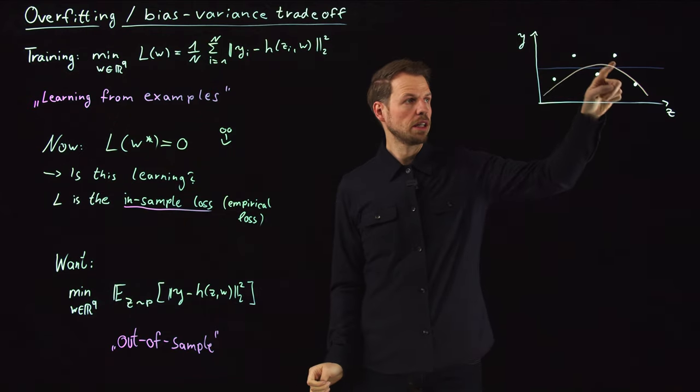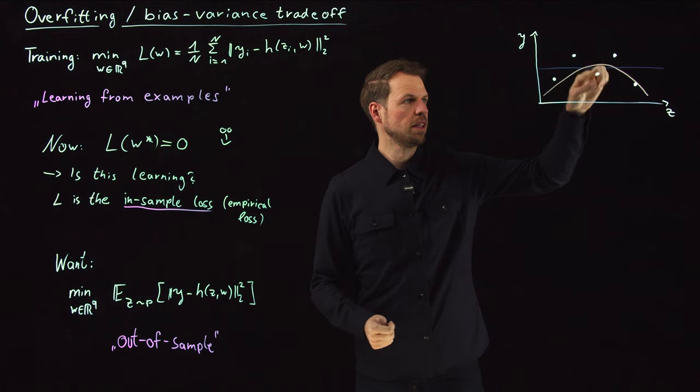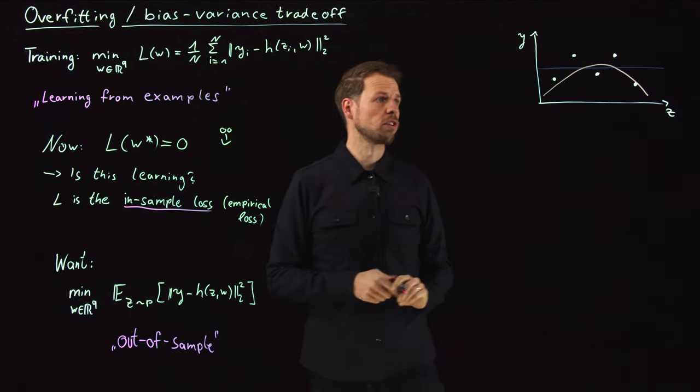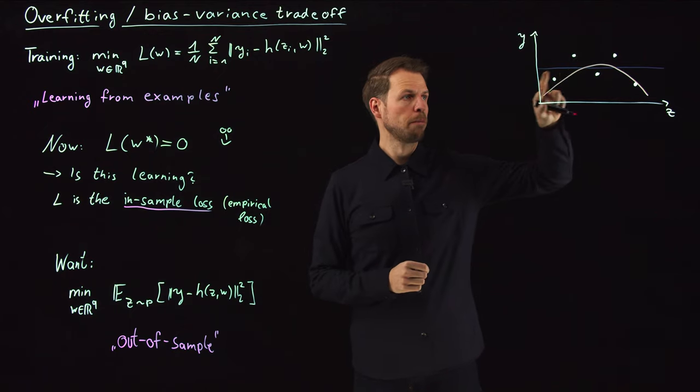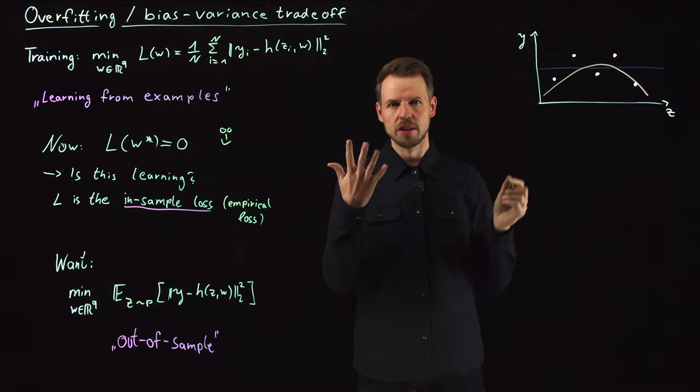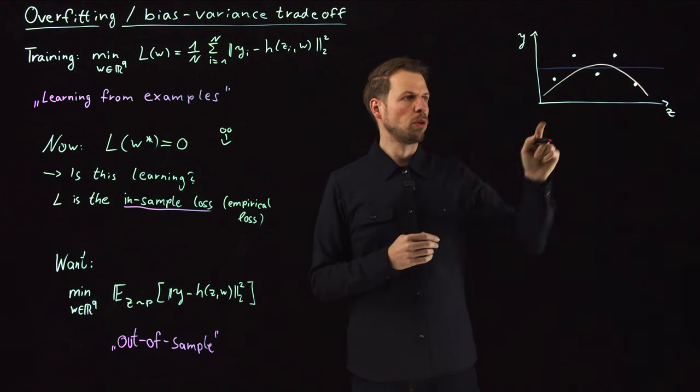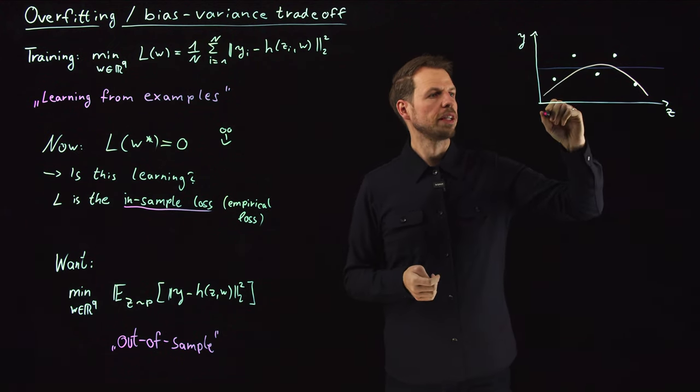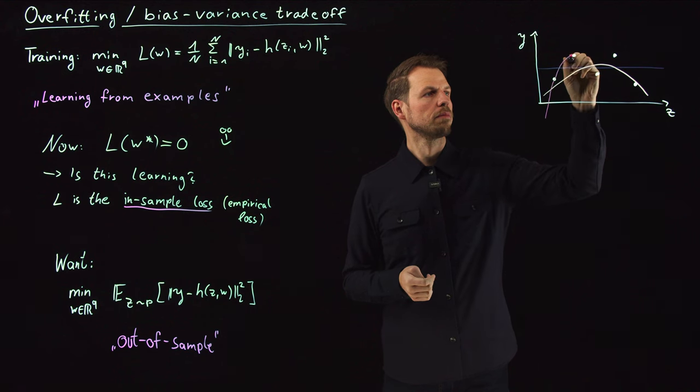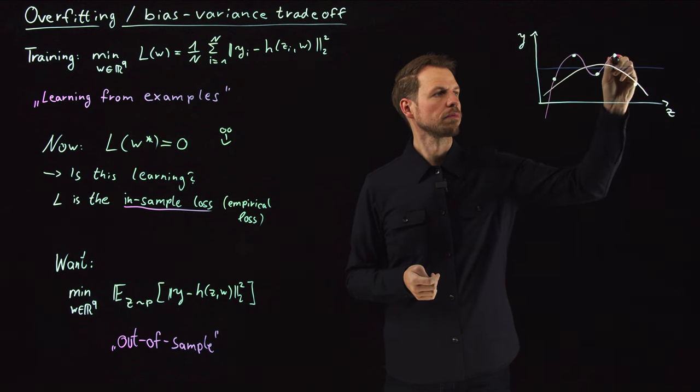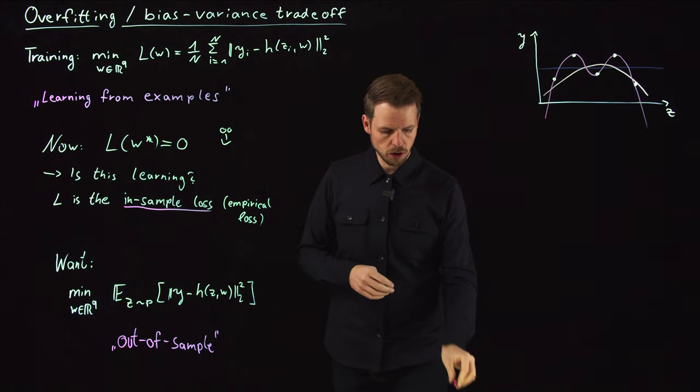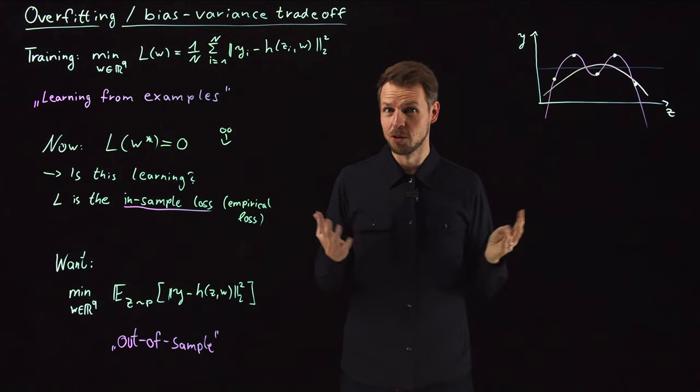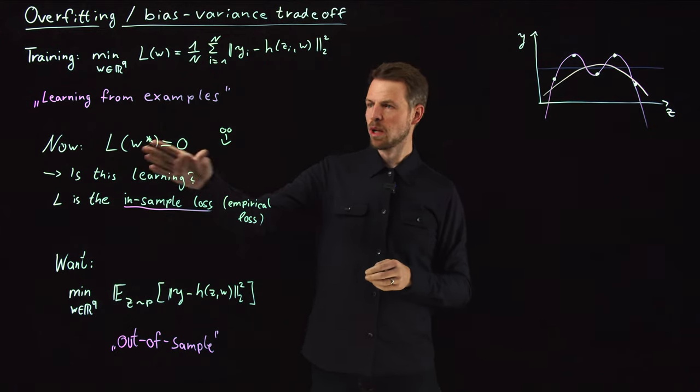Now we can take this to the extreme and say, okay, we have five points. So we have five degrees of freedom that we can fit. Let's fit a polynomial of order 4 plus the bias term. So what you might get is something like this. In-sample loss is zero, if I had drawn it better, but in-sample loss can be driven to zero.